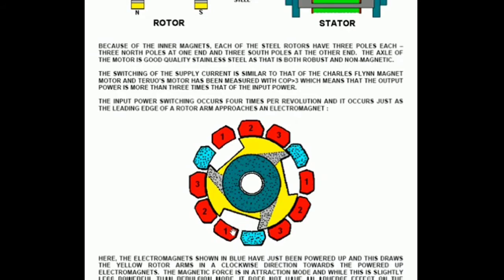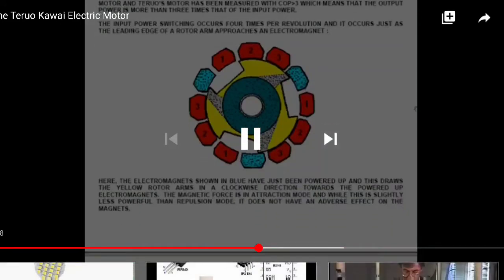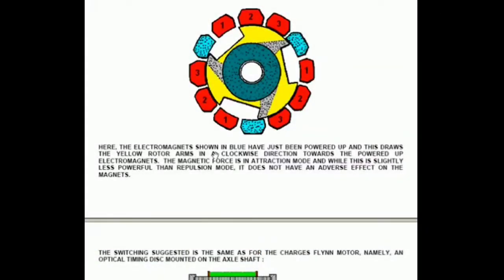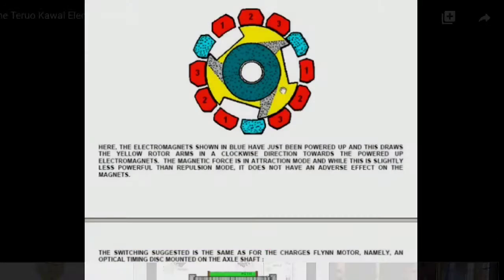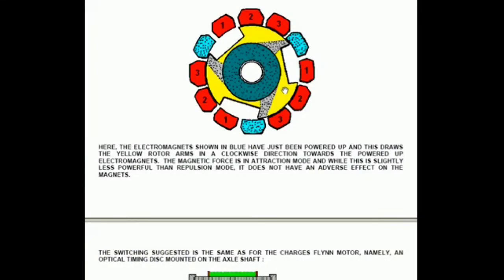In this particular diagram here the electromagnets shown in blue are just being powered up and that draws the yellow rotor arms in a clockwise direction towards the powered up electromagnets. The magnetic force is in attraction mode and while this is slightly less powerful than repulsion mode it does not have an adverse effect on the magnets whereas repulsion mode can after some years diminish the power of the permanent magnets.